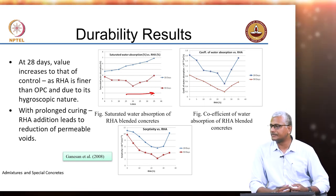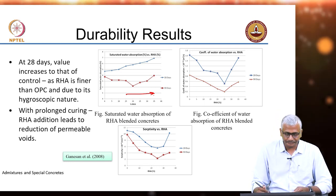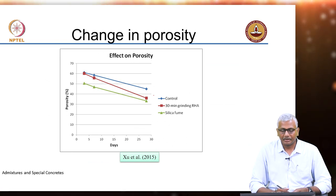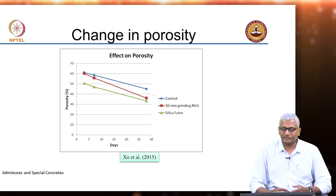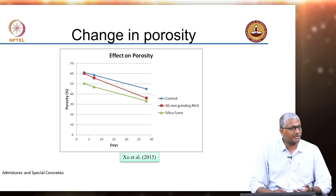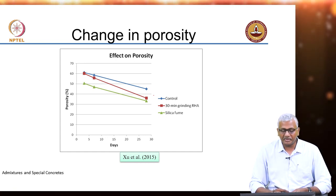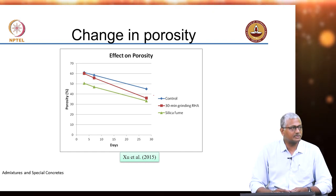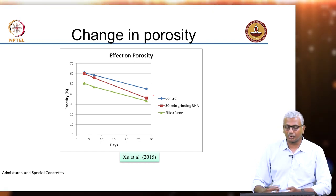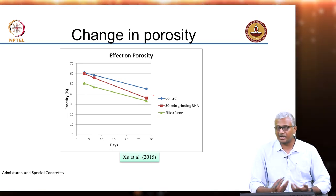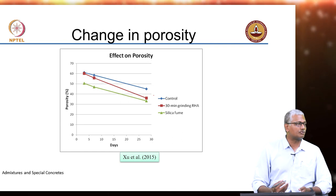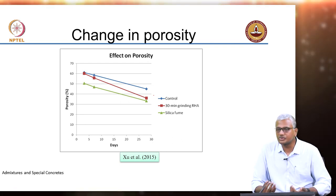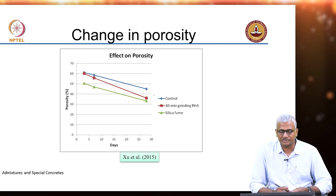Beyond about 10 percent replacement you are not relying on pozzolanic reactivity that much — you do not have sufficient lime in the system to interact with the RHA. The change in porosity is reflected in paste measurements: porosity with rice husk ash based systems reduces to the level of silica fume based systems given long enough curing, primarily because of the pozzolanic effect. With silica fume, the filler effect provides almost immediate porosity reduction from the beginning.